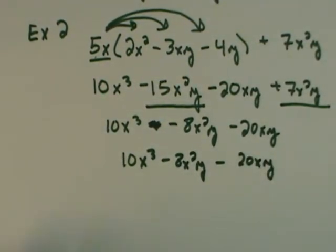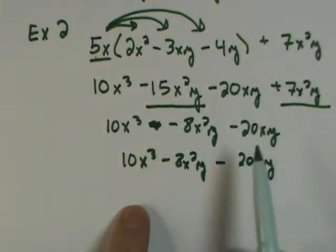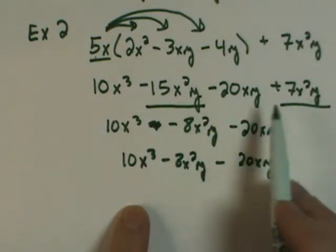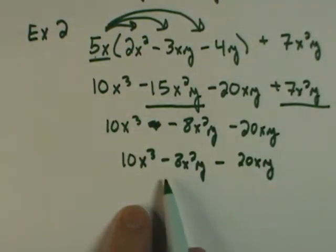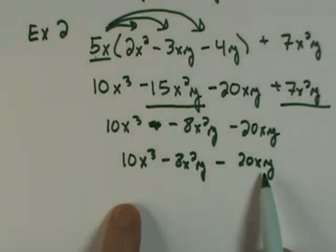The key to adding and subtracting when multiplying is that after you multiply and create the new terms, look to find the like labels or like terms. When the like variables are combined, you end up with a simplified expression. In this case, it was 10x cubed minus 8x squared y minus 20xy. All the labels are different, so that's how I know I'm done.